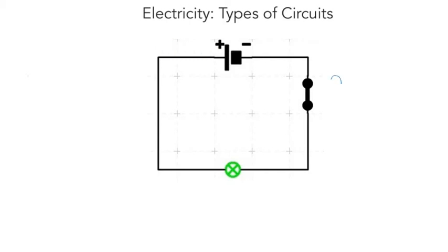and then it goes back to the battery. So this, again, is an example of a closed circuit.